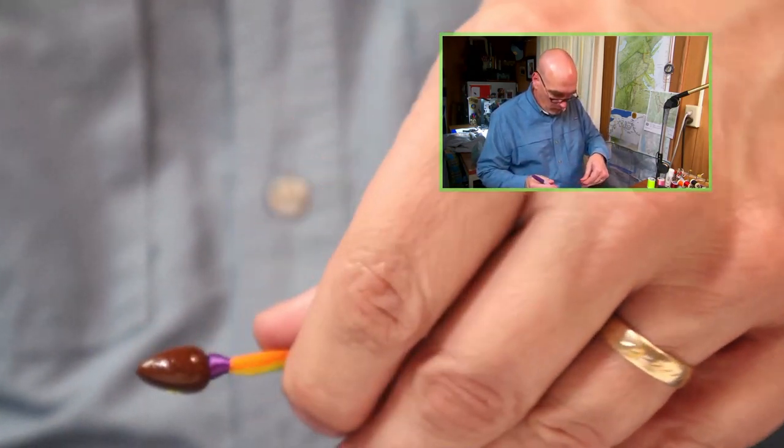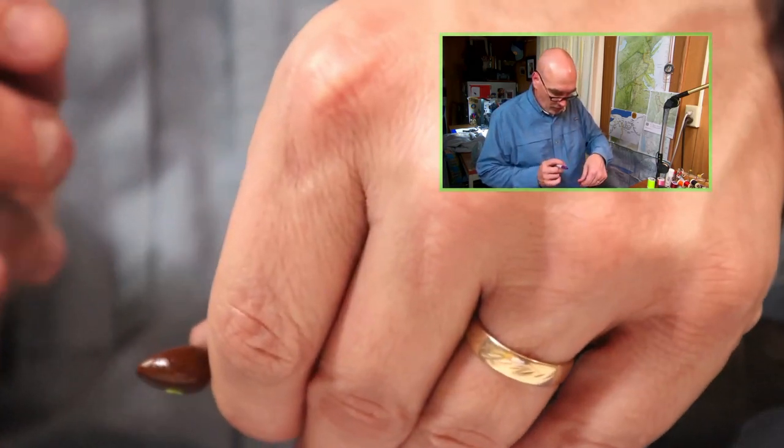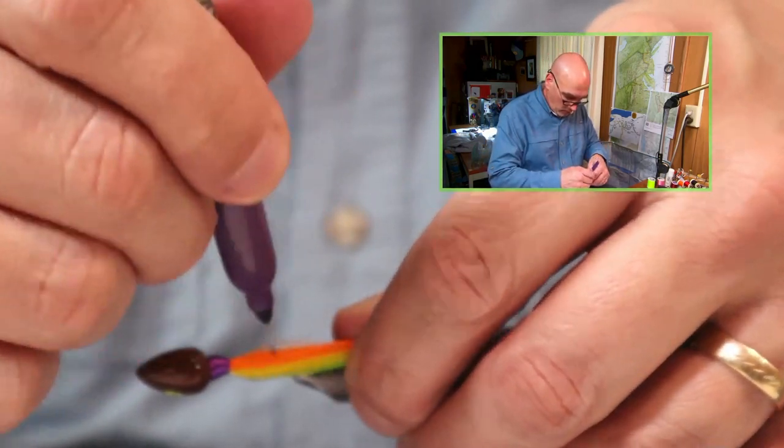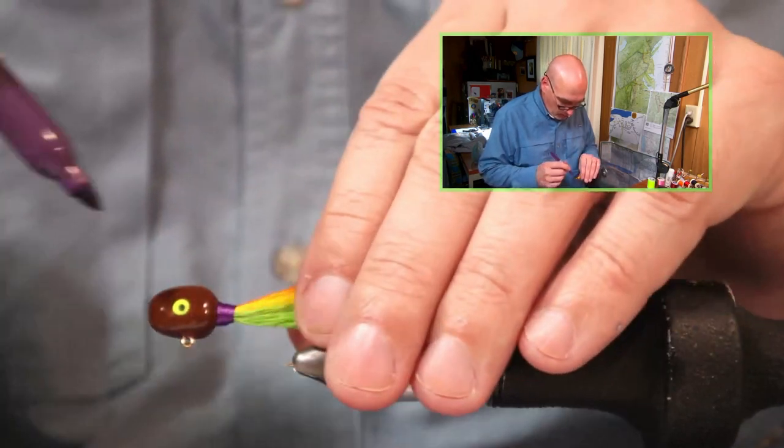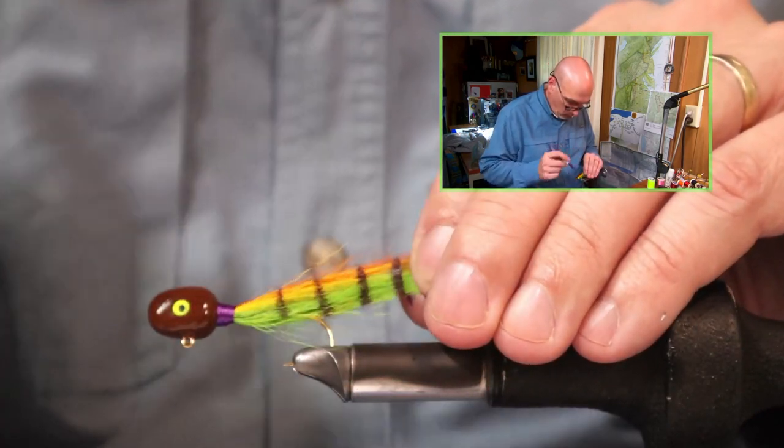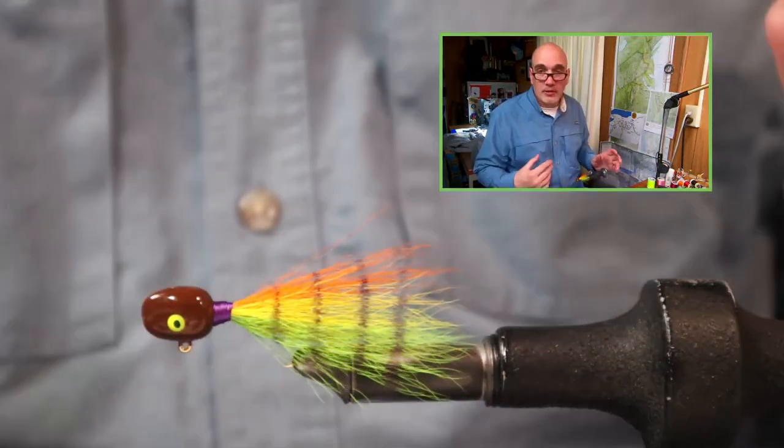Again make sure that hair is centered on the jig hook itself. Stripe one side and turn and add your four stripes to the other side and that's all there is to it.